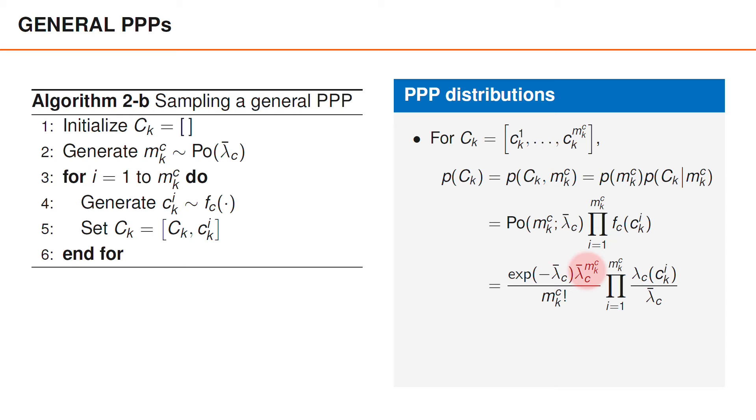As you can see, lambda bar c to the power of mkc cancels out since we divide by lambda bar c in each factor in this product, which becomes precisely 1 divided by lambda bar c to the power of mkc. The only remaining factors are therefore e to the power of minus lambda bar c divided by mkc factorial times the product over i of the intensity function lambda c of Cki. It's good to learn to recognize this expression for the Poisson point process distribution, since you will see it every now and then in the upcoming weeks.